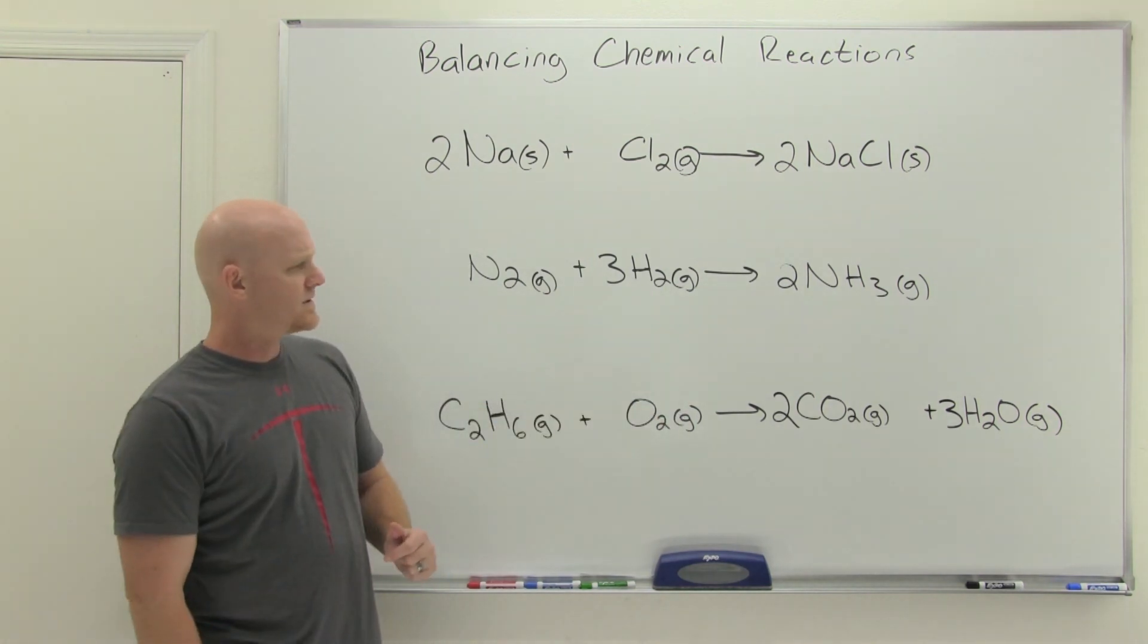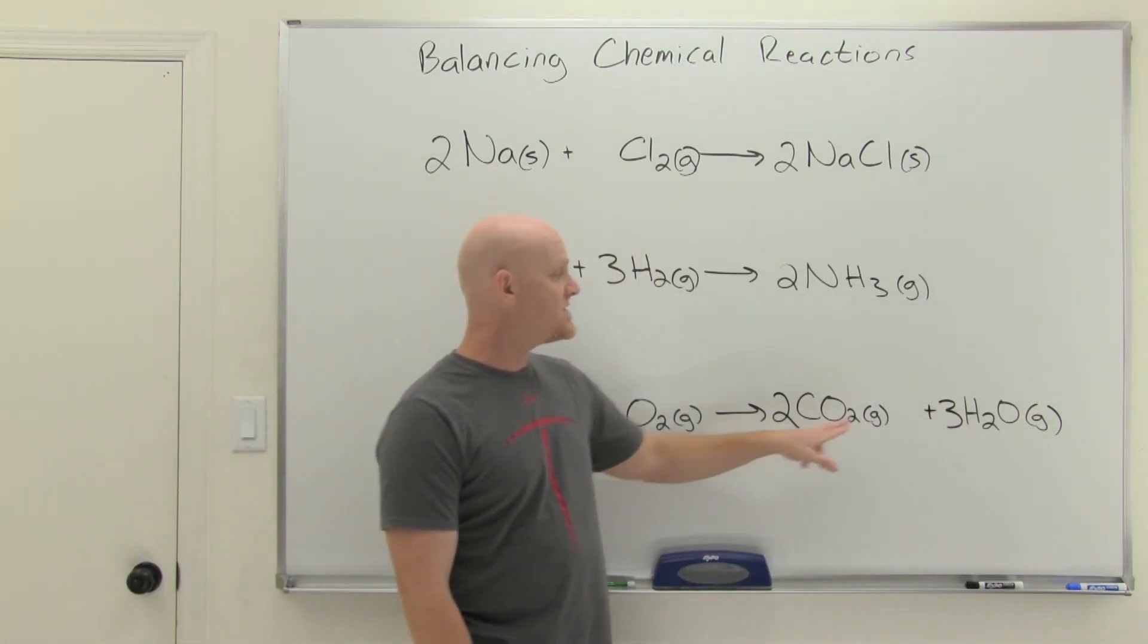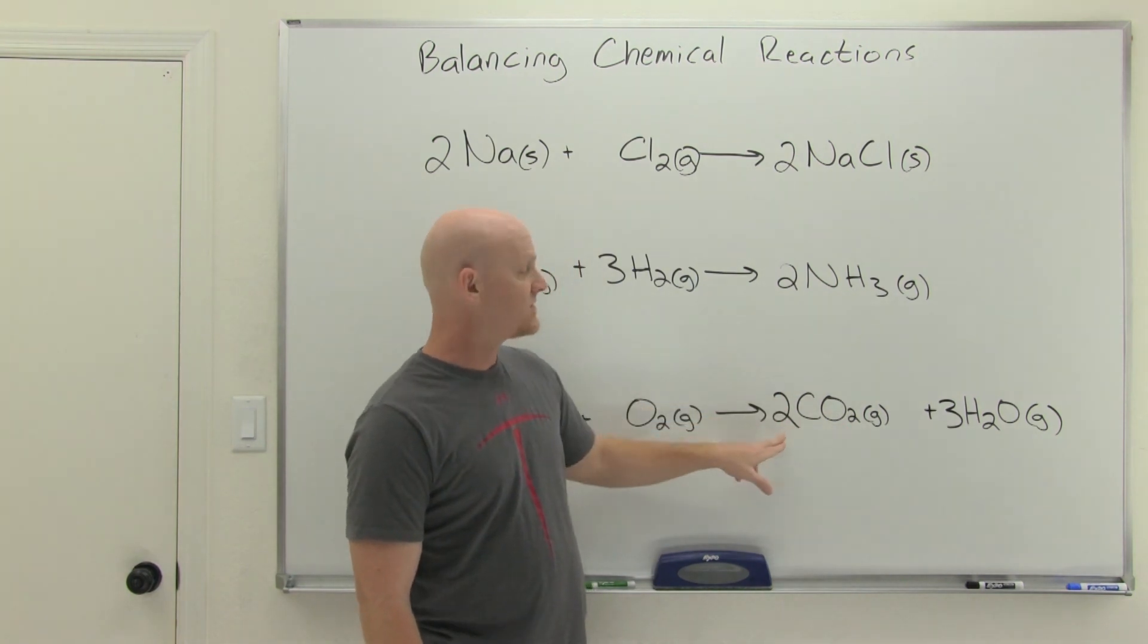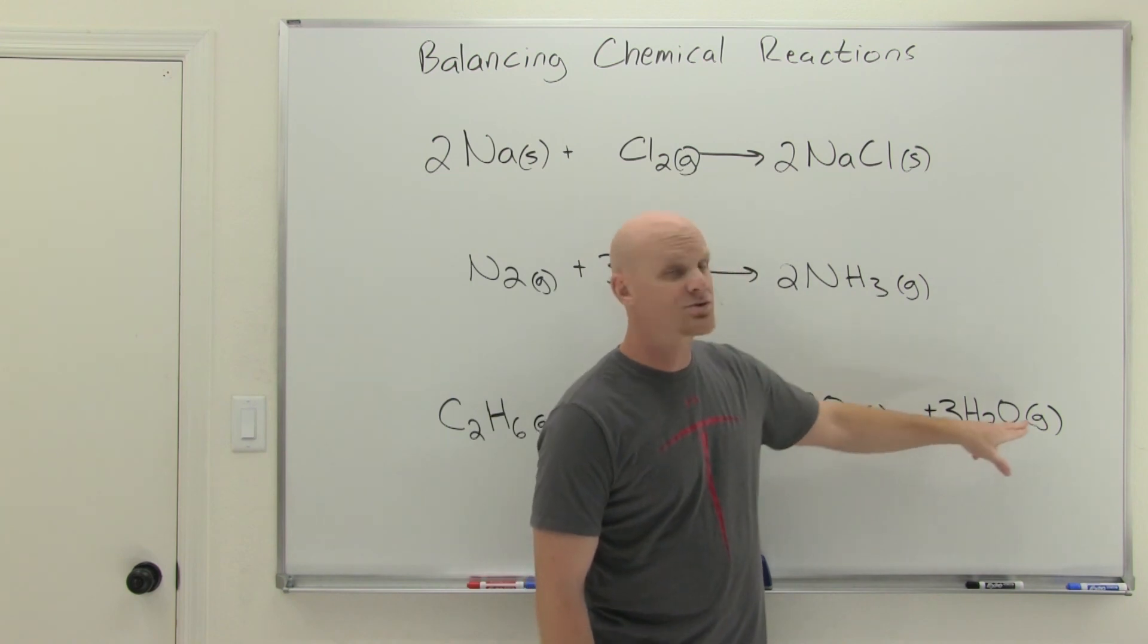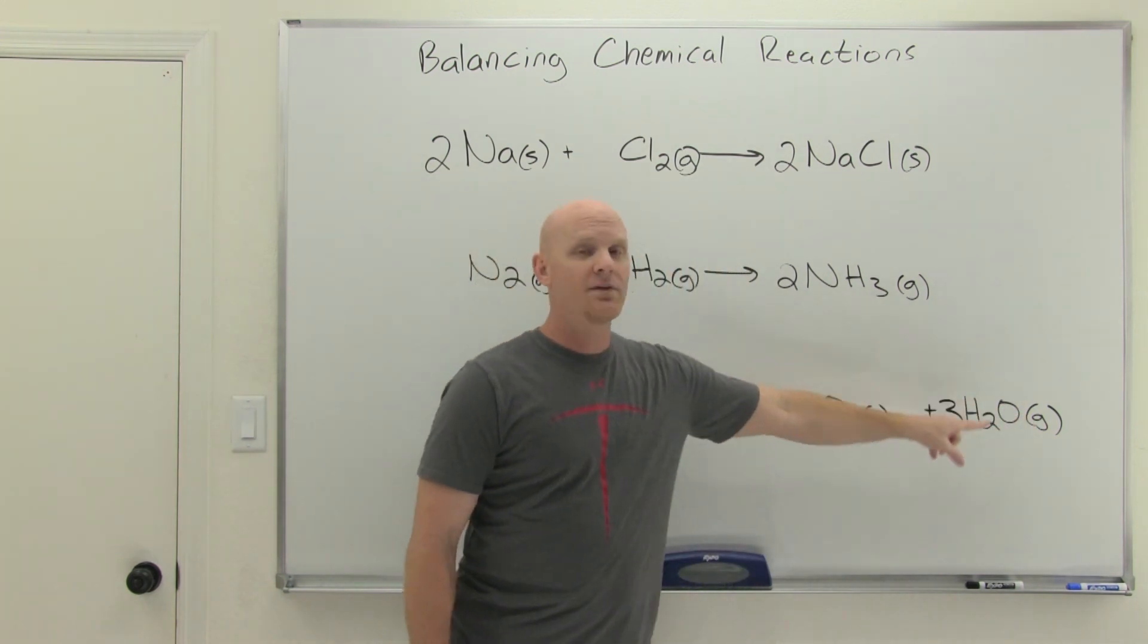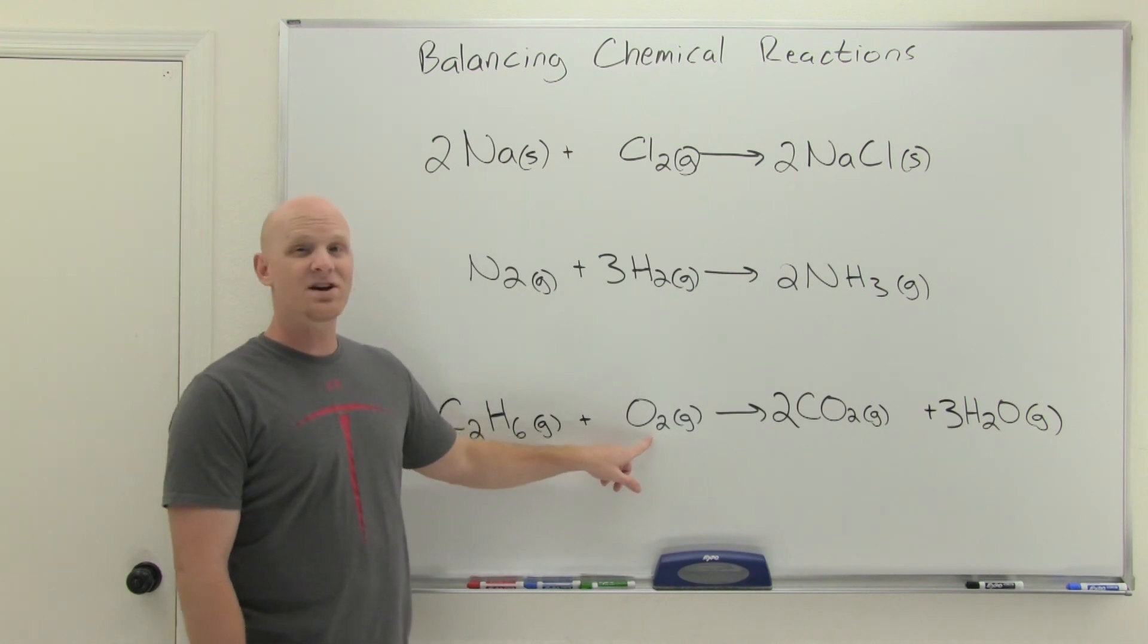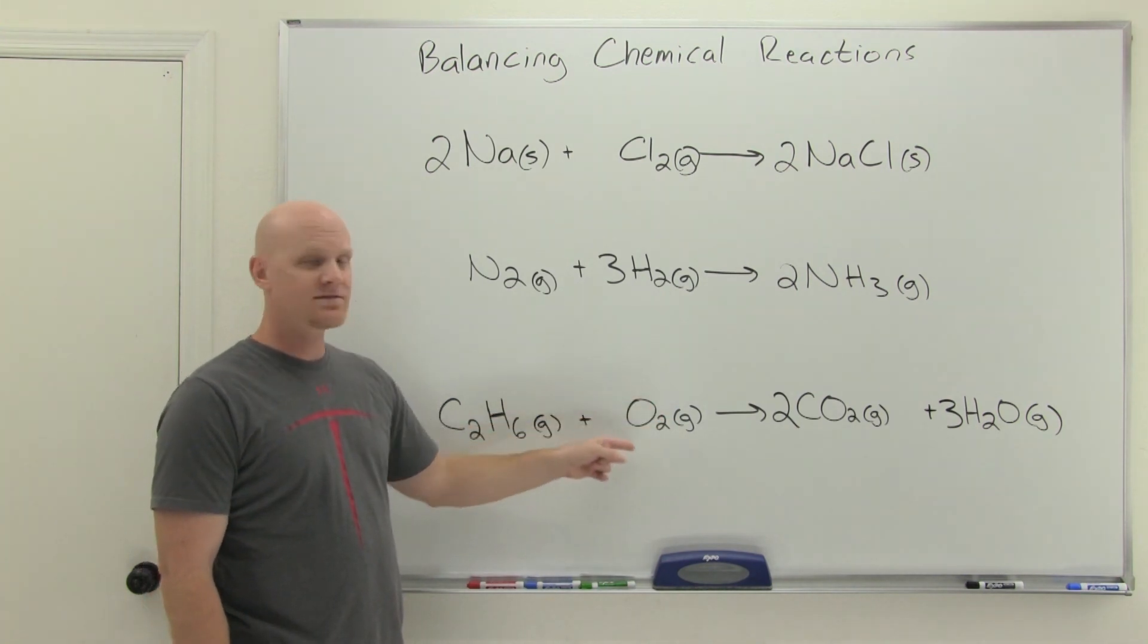And now we're going to run into a little problem here, because now that I've put coefficients here and here, the oxygens on this side are set. And two of the CO2s, which have two oxygens each, is going to be four oxygen atoms. And then three waters, which have one oxygen each, will be another three oxygen atoms for a total of seven oxygen atoms. That's an odd number. Unfortunately, over here, the oxygens come two by two by two. And so to get seven total atoms is not going to be a nice, round, whole number here.